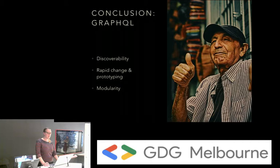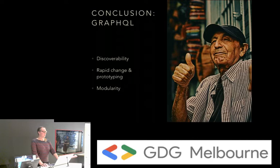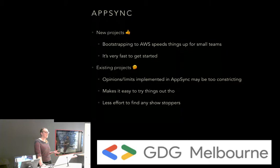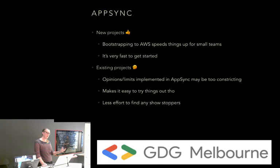In conclusion, GraphQL — I'm still excited about it, I still like it. The discoverability is a huge feature. It allows us to make quite fast and quite big changes to the API, and it definitely helps in prototyping. The modularity of being able to point certain fields at certain data sources is really good for us. AppSync — for new projects I think it's really good. Being able to connect to other AWS services definitely speeds things up and AppSync is super easy to get started on. For existing projects, I'm not sure if AppSync's limitations will cause problems, but it's less effort to start with AppSync, find those problems, and move to an alternative.